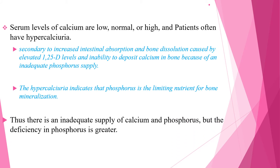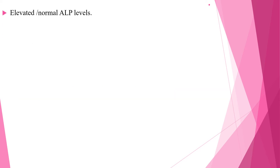Increased provision of phosphorus alone often cannot correct the mineralization defect; increased calcium is also necessary. Thus there is an inadequate supply of both calcium and phosphorus, but the deficiency in phosphorus is greater in rickets of prematurity. Alkaline phosphatase levels are often elevated, but some affected infants have normal levels. In some cases, normal alkaline phosphatase levels might be secondary to resolution of bone demineralization due to adequate mineral supply, despite continued radiologic changes which take longer to resolve. However, alkaline phosphatase levels might also be normal despite active disease.